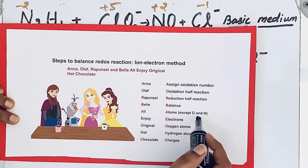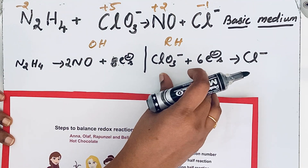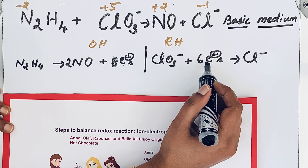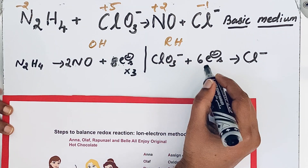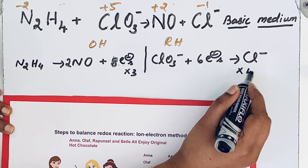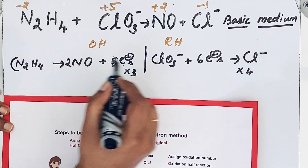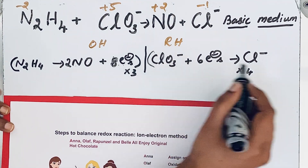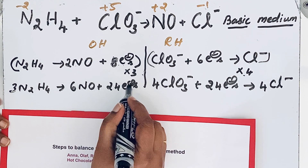After balancing atoms other than oxygen and hydrogen, the next step is to balance electrons. In redox reactions, the number of electrons lost must equal the number of electrons gained. Here we have 8 electrons lost and 6 electrons gained — they are not equal. To balance, we multiply the oxidation half reaction by 3 and the reduction half reaction by 4, giving 24 electrons on each side (8×3 = 24 and 6×4 = 24). You must multiply the whole half reaction. Now the electrons are equal and can be cancelled out.